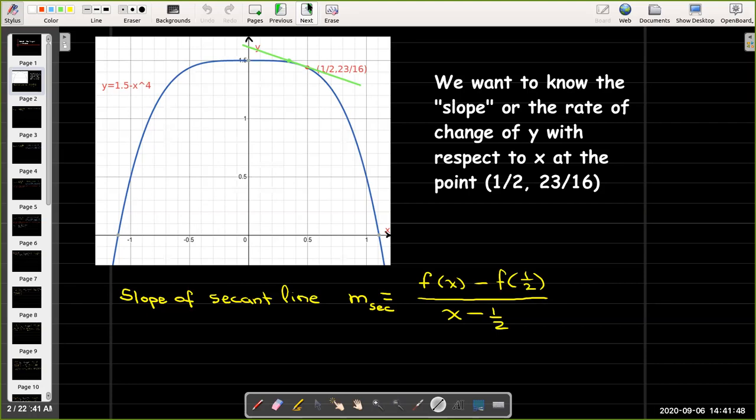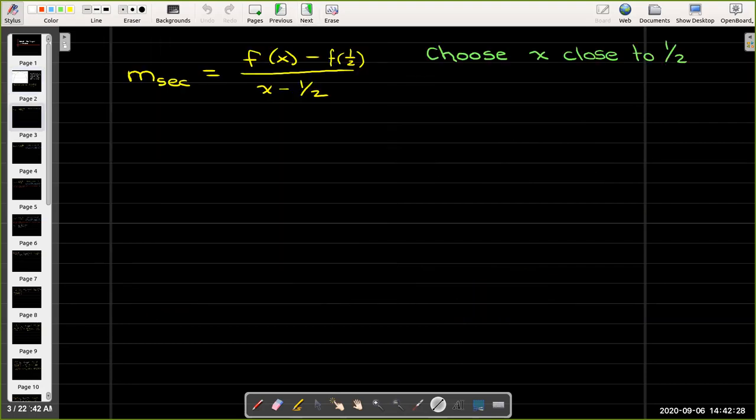This is like the idea of the slope of a line. We said we could get an approximation by choosing another point close to our given point, drawing a line through it, and calculating its slope. This line we call a secant line, and we found the slope of the secant line by this difference quotient: f(x) minus f(1/2) all over x minus 1/2. Of course, we want to choose x close to 1/2 to get a good approximation.